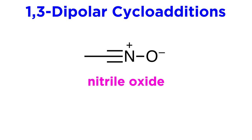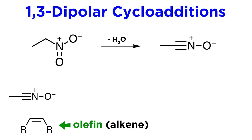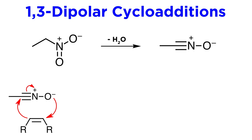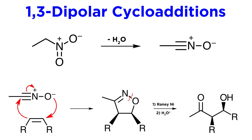Looking at one more example, let's use a nitrile oxide — a nitrile where the nitrogen atom is positively charged and bound to an oxyanion. These are regularly produced via dehydration of nitroalkanes, typically in situ, meaning that we produce them and then immediately react them with olefins, which is just another word for alkenes. This strategy allows for the avoidance of dipole decomposition, as it is very reactive. The nitrile oxide reacts with the olefin to produce an isoxazoline. Notice that the substituents are cis to one another on the product, given that they were cis on the reagent. This can be cleaved at the weak N–O bond by Raney nickel and then protonated in aqueous acidic workup to generate this aldol-type product.